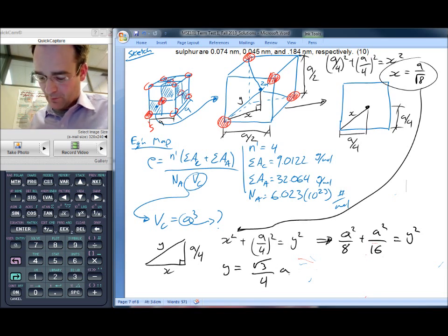And remember what we needed was A right here. So we're just going to rewrite that in terms of A. So A is equal to 4Y over root 3.